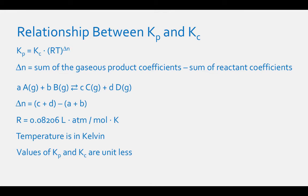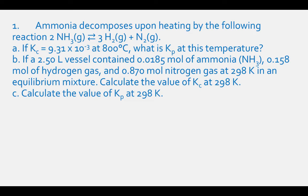Let's work some problems. Problem 1: ammonia decomposes upon heating — 2NH₃(g) ⇌ 3H₂(g) + N₂(g). Part A: if Kc = 9.31 × 10⁻³ at 800°C, what is Kp at this temperature? Part B: if a 2.50 L vessel contains 0.0185 mol NH₃, 0.158 mol H₂, and 0.870 mol N₂ at 298 K in an equilibrium mixture, calculate Kc. Part C: calculate Kp at 298 K.